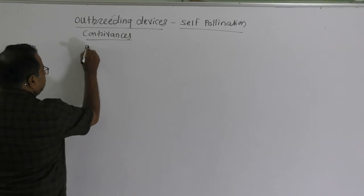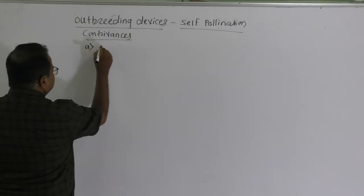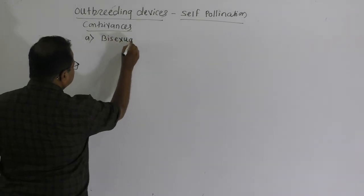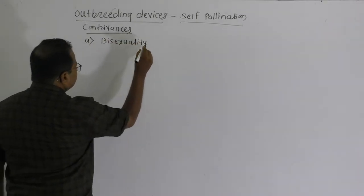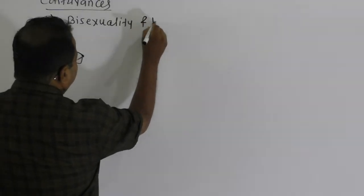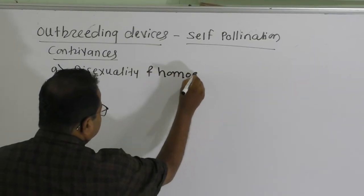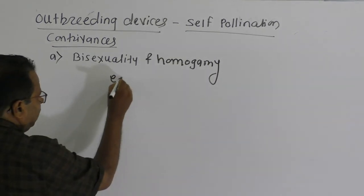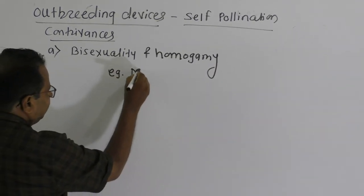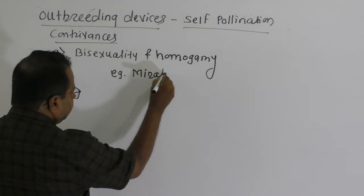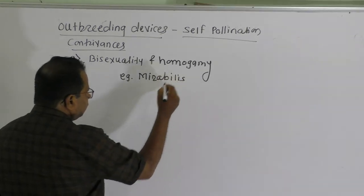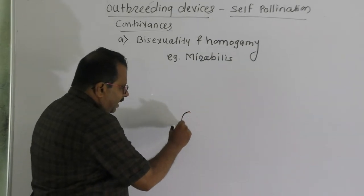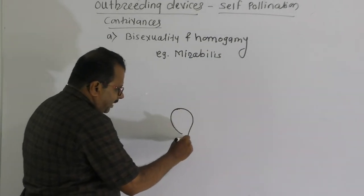The first contrivance of self-pollination is Bisexuality and Homogamy. A common example is Mirabilis — the Mirabilis flower.